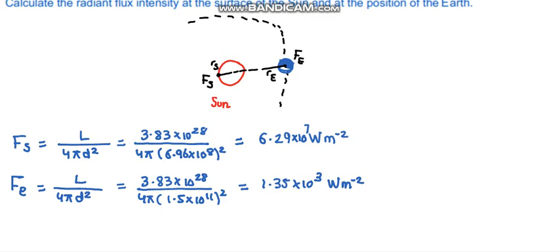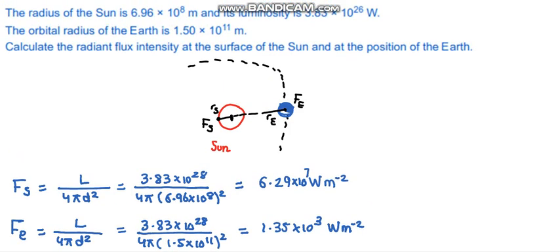So while solving these questions do bear in mind that we have to take the distance from the center of the star, whatever the star is. In this case it was the sun, so the center of the star to the center of the earth. In the question it said that it is the orbital radius. So orbital radius means that the earth is orbiting around the sun, so the orbital radius is from the center of the earth to the center of the sun. So you must realize the terminologies and apply them appropriately.